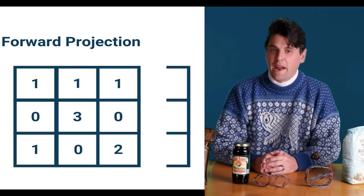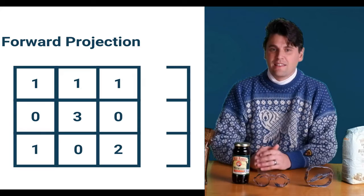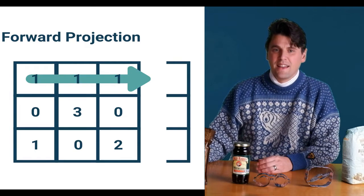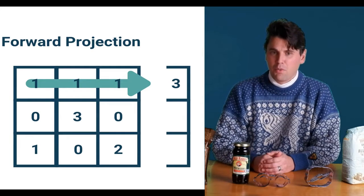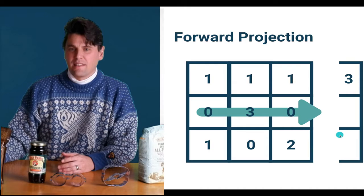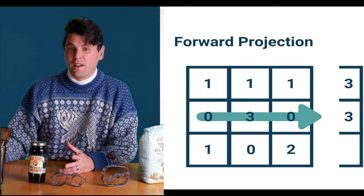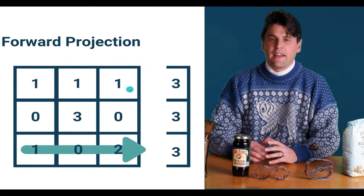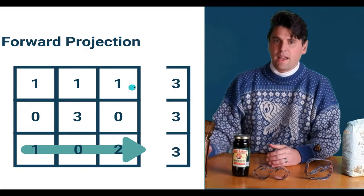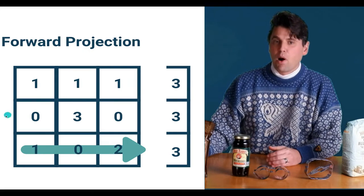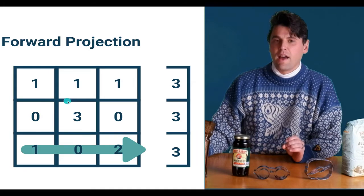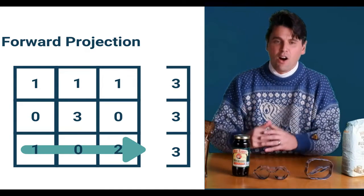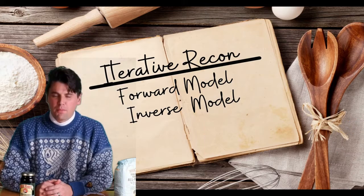The simplest case is parallel projections, like first generation CT. If we were doing parallel projections through this simple matrix, we first go through the top row: 1 plus 1 plus 1 is 3. In the middle row we can see 0, 3, and 0 is also 3. And yet again we get 3. In our system it's going to be a little more complicated - sometimes you're going to have to do more interpolation between these different values. Add up all the values along the ray paths, that's all that forward projection is. We've got our forward model.